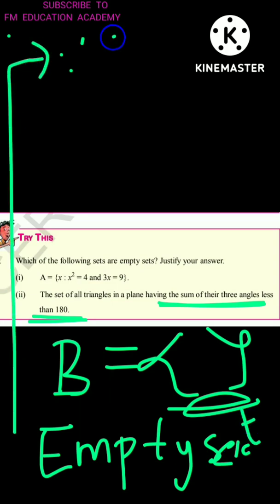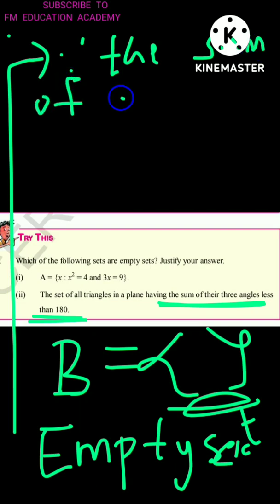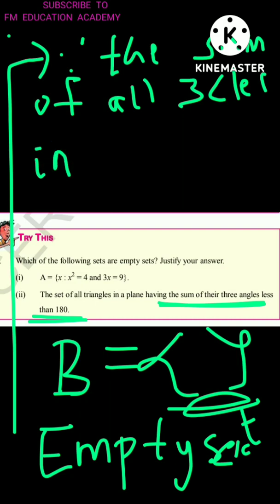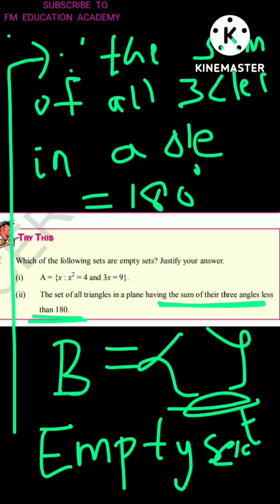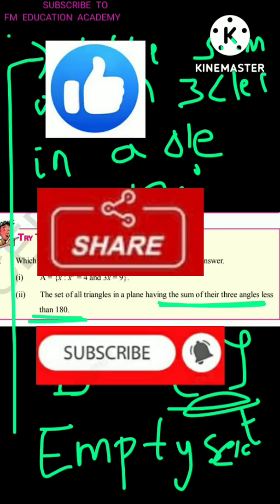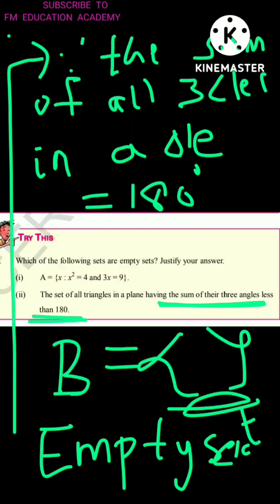The reason: since the sum of all three angles in a triangle is equal to 180°, B is an empty set. This finishes the Try This on page 35 in the new textbook 2020-2021 edition of TS and AP Class 10. Hope you found this video helpful. If so, please like, share with your friends, and subscribe to this channel, as we make educational videos daily.